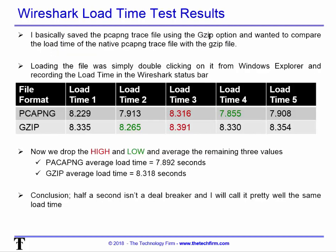I saved the PCAP trace file using the gzip option and compared how long it took Wireshark to open the gzipped file versus the native PCAP-NG file. I double-clicked each file from Windows Explorer and recorded the load time from the status bar. With five samples, dropping the high and low values and averaging the remaining three, the difference was that gzip was 0.5 seconds slower than PCAP-NG — not a deal breaker at all. I'd call it essentially the same load time.